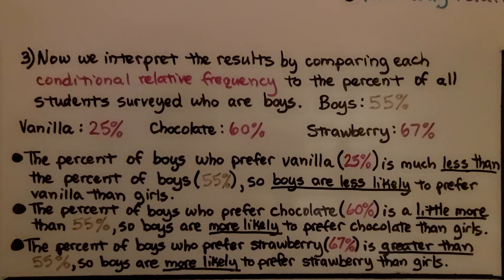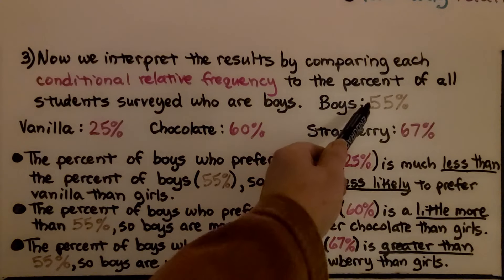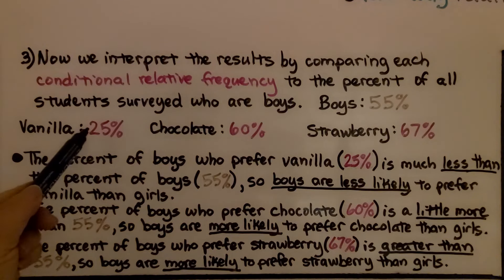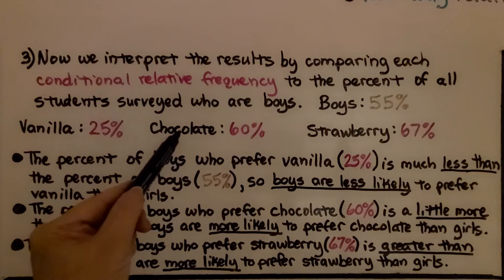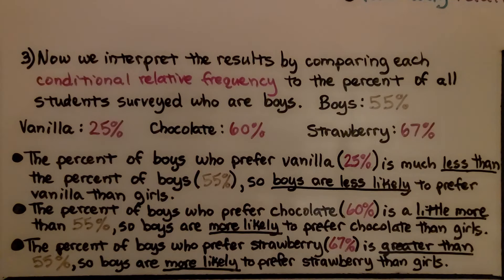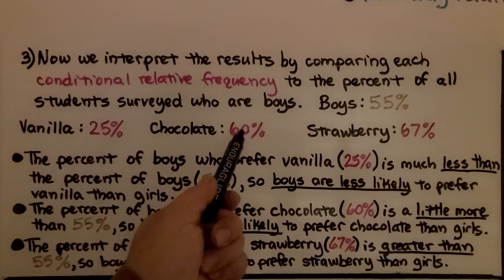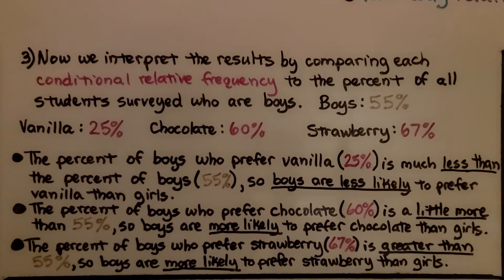Now we interpret the results by comparing each conditional relative frequency to the percent of all students surveyed who are boys — which is 55%. Vanilla was 25%, chocolate was 60%, and strawberry was 67%. The 25% for vanilla is much less than 55%, so boys are less likely to prefer vanilla than girls. The 60% for chocolate is a little more than 55%, so boys are more likely to prefer chocolate than girls. And the 67% for strawberry is greater than 55%, so boys are more likely to prefer strawberry than girls.